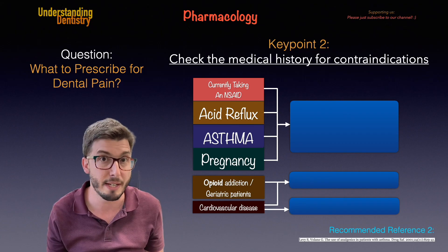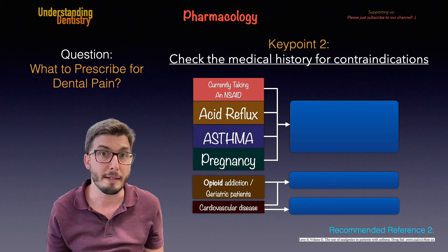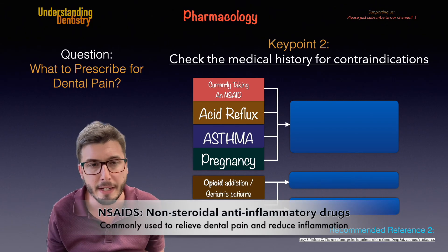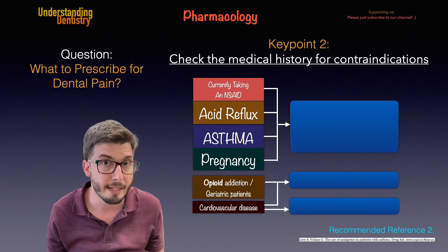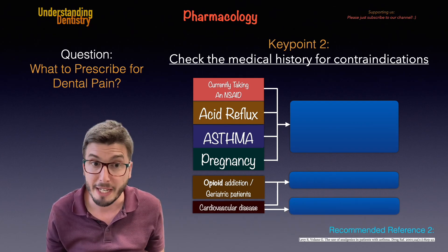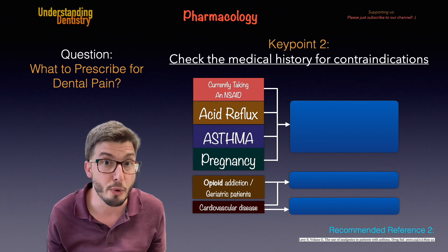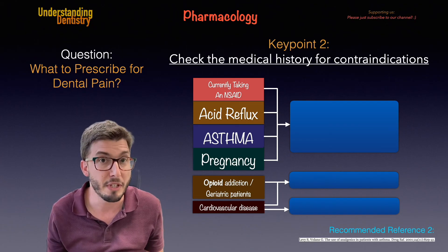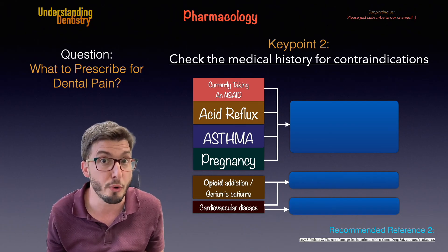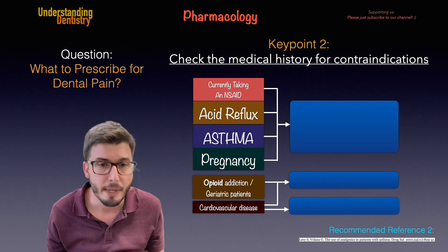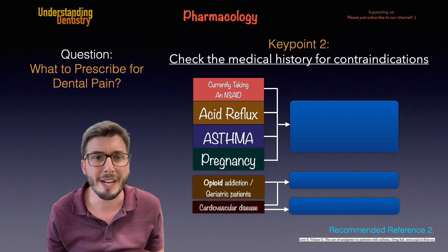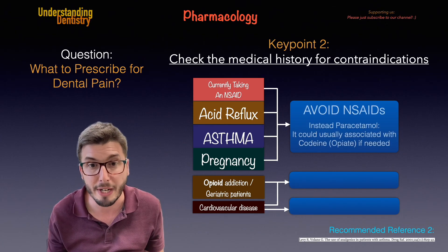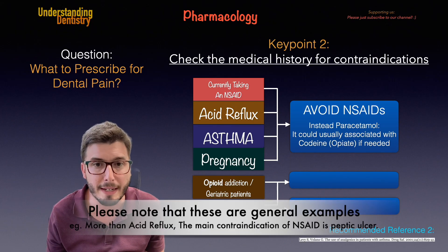The second key point, also very important, is that we need to check the medical history of the patient for contraindications. Sometimes we want to prescribe NSAIDs because they are very good for dental pain, but first we need to check. We may have patients already taking an NSAID for an unrelated condition, or patients who have asthma, or patients who are pregnant.